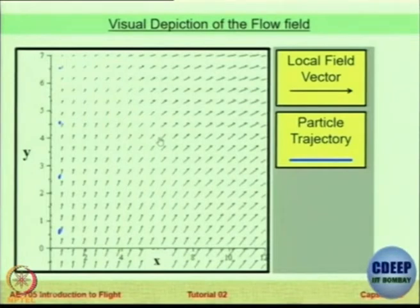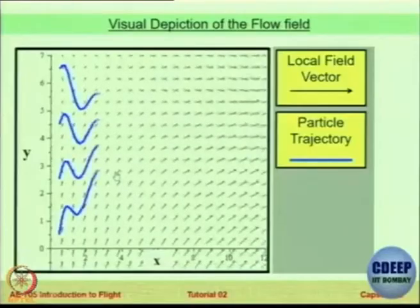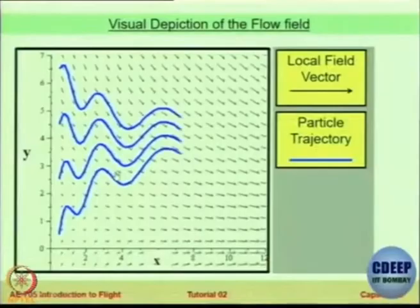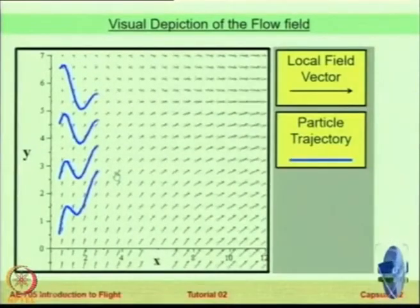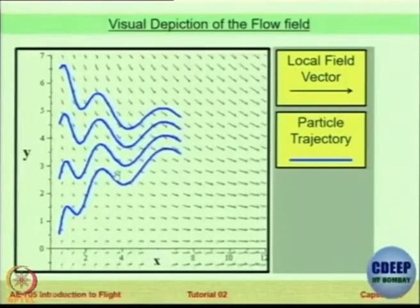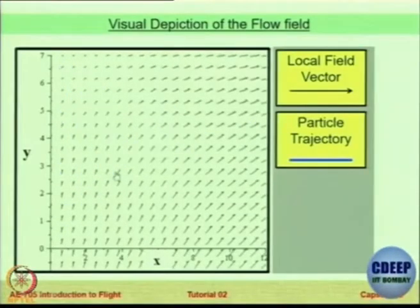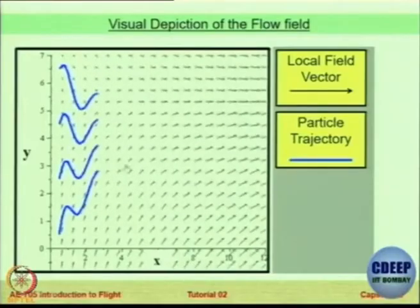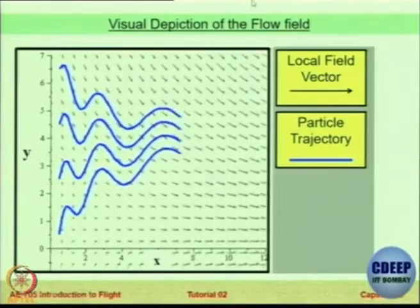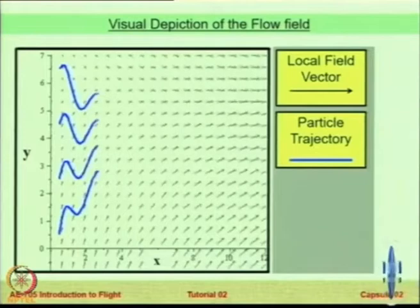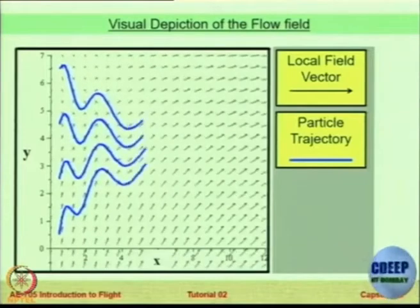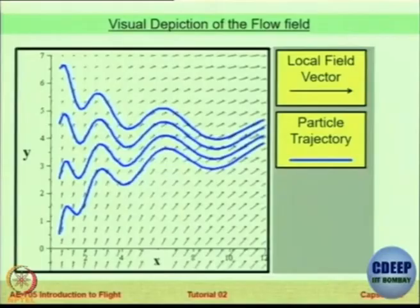These arrows represent the local flow field vector, which changes as a function of time because there is a time term. The blue lines are the particle trajectories. In this video, the equation from the previous slide has been plotted as a function of time for y and x using the value of omega as 2 pi. You can see that the local field vector is changing its angle as a function of time and the trajectory of the particles is following a particular direction.